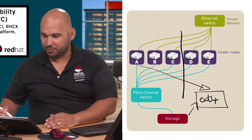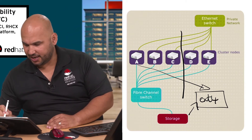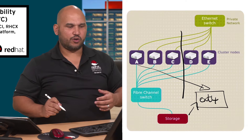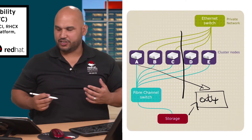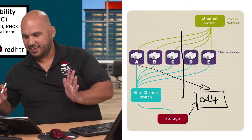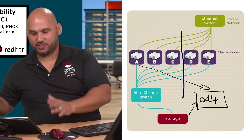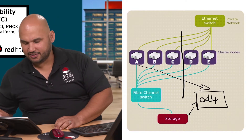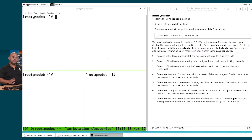Node D comes along and says: we have the shared storage, I can still access the shared storage. The node D and E portion of the cluster attempts to mount that ext4-based file system. And let's begin.